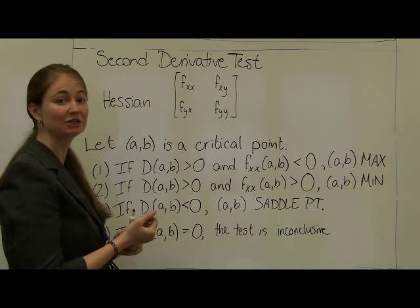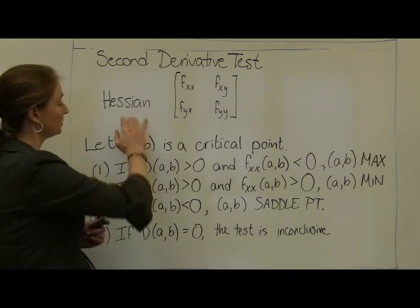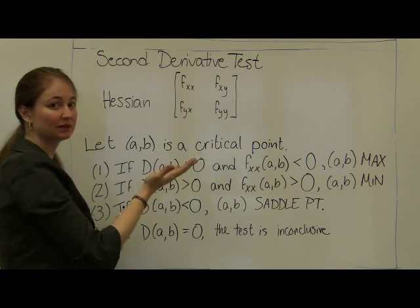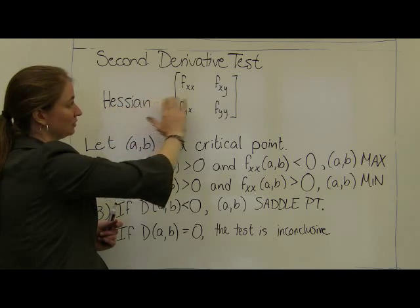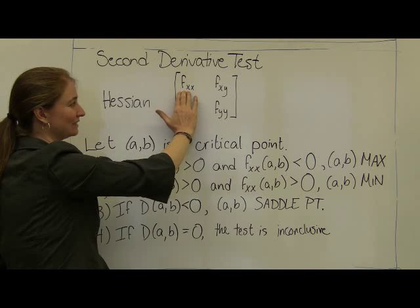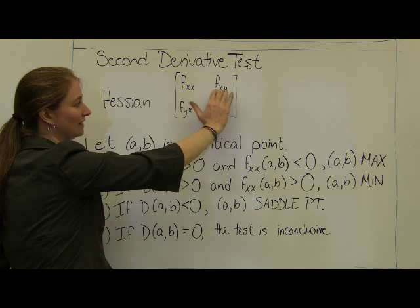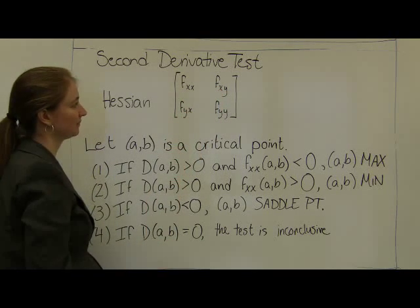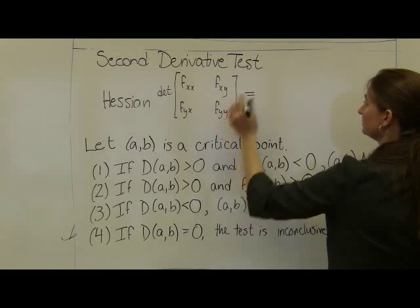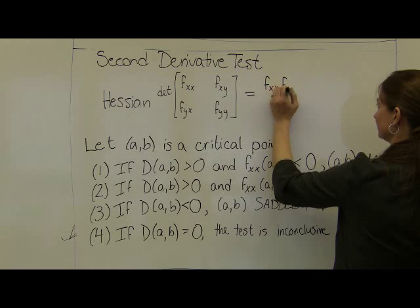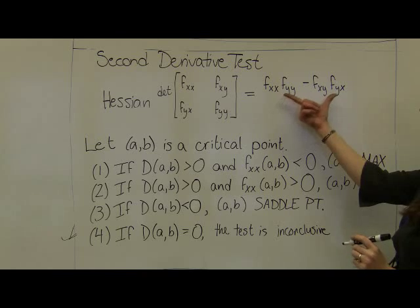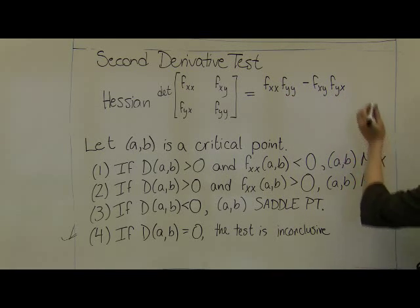The first step is to evaluate something called the discriminant. We start with the Hessian matrix — a matrix of all of the partial derivatives. Along the main axis we have the second partial derivative with respect to x and the second partial with respect to y, and the mixed partial derivatives along the minor axis. The determinant of this matrix is f_xx times f_yy minus f_xy times f_yx. This is what we call the discriminant, labeled with a capital D.